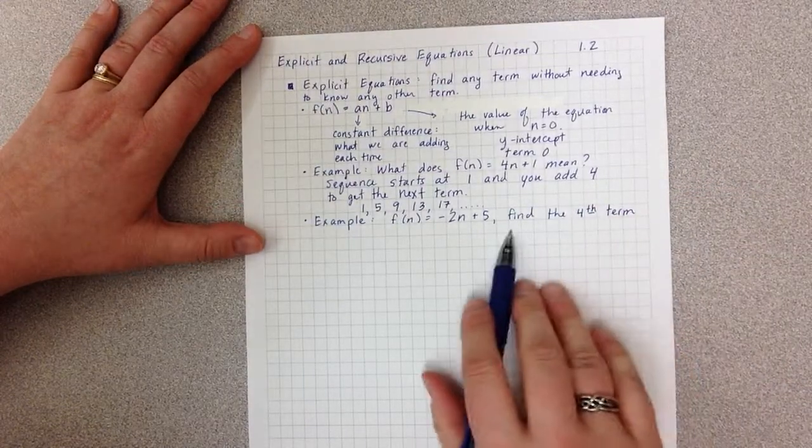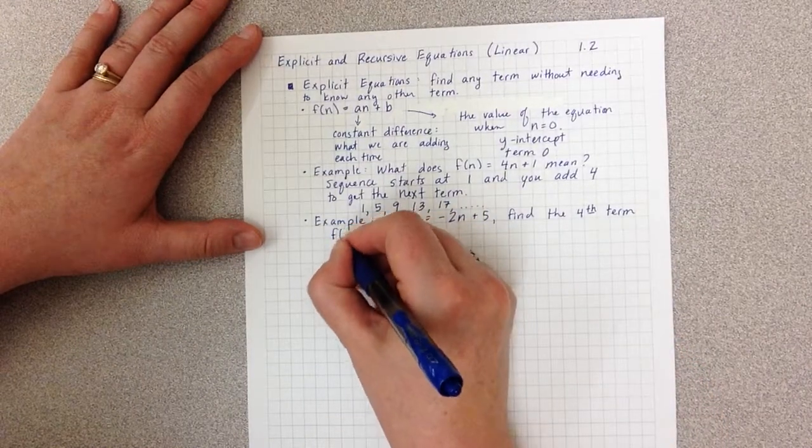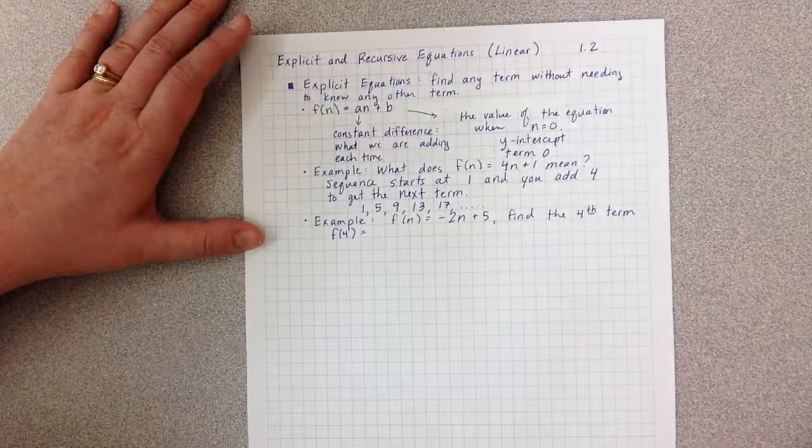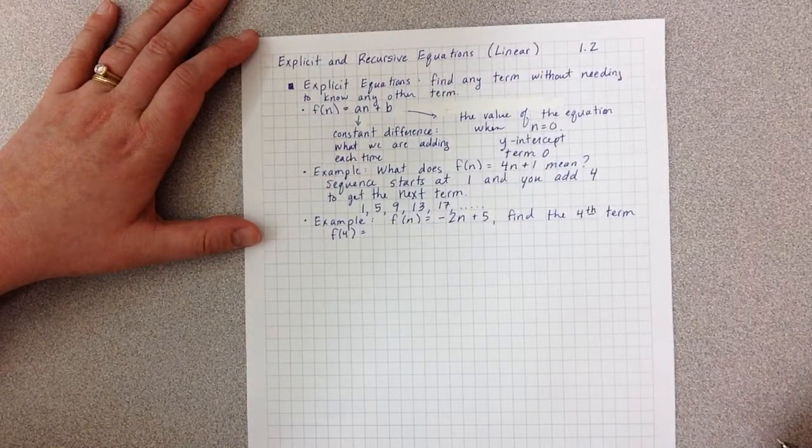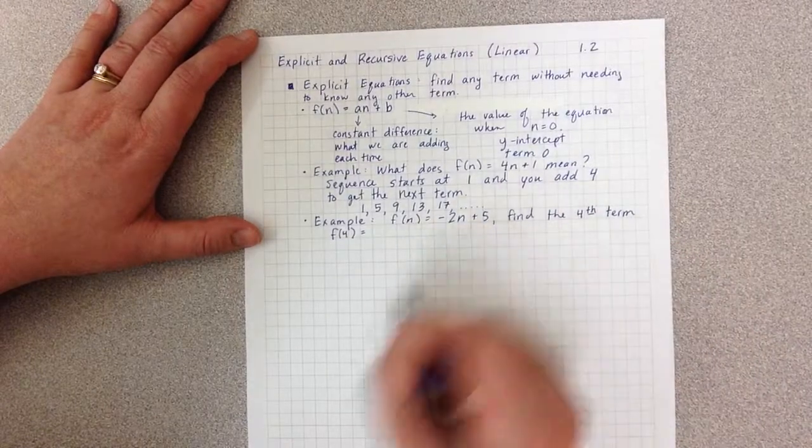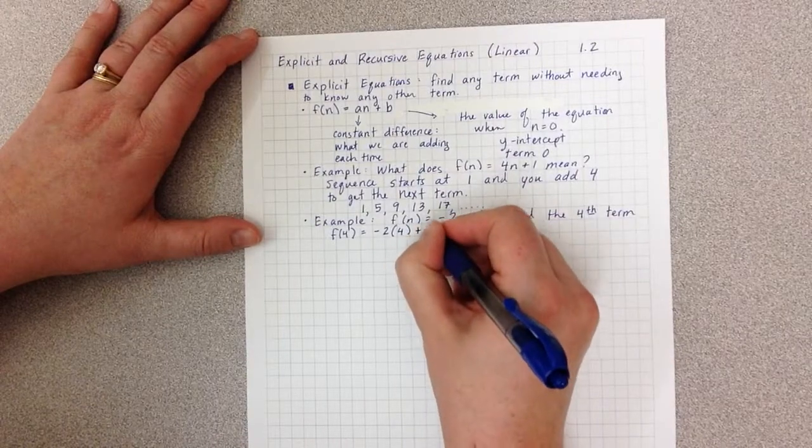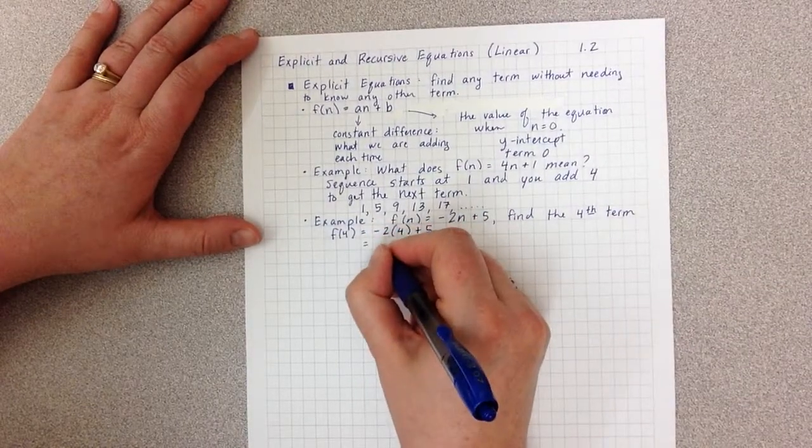So what we're meaning here is we want to basically find f(4), which from the previous notes on function notation, we can do without knowing anything else besides the explicit equation. So I plug in 4, and then I simplify.